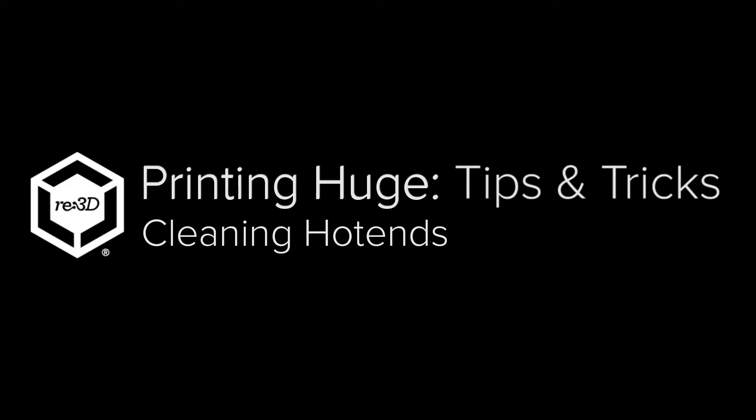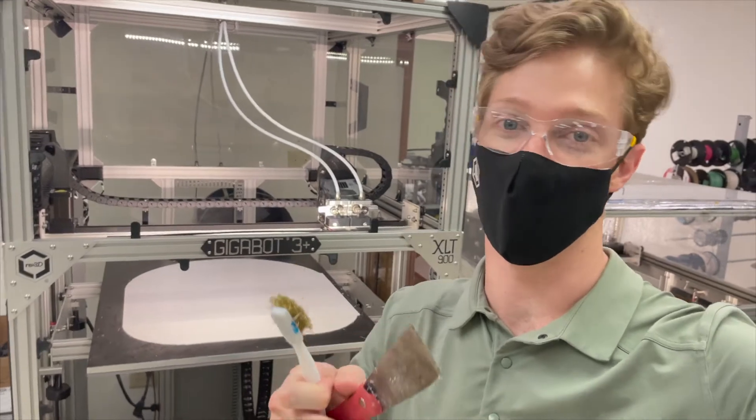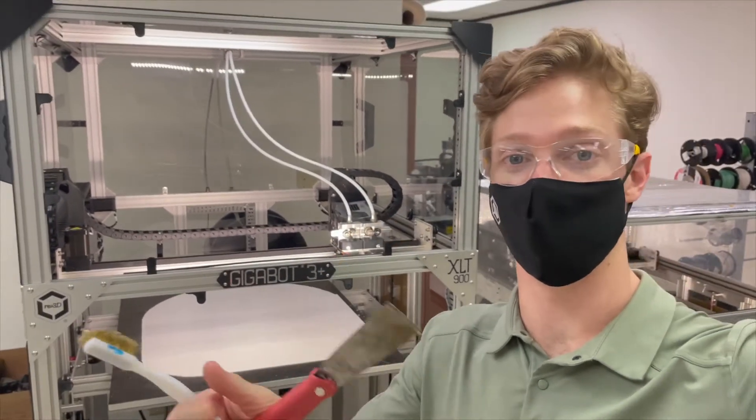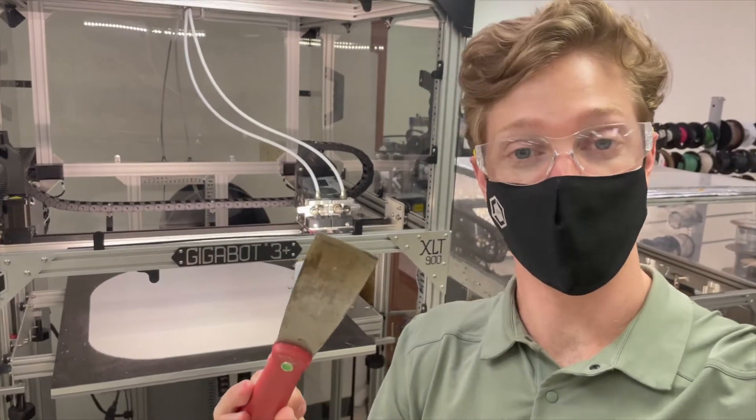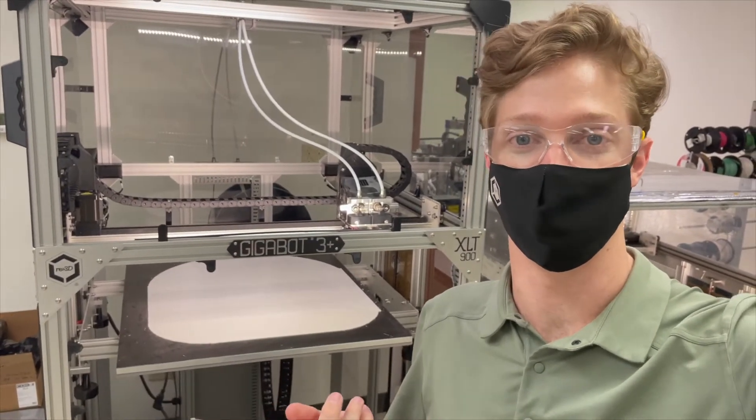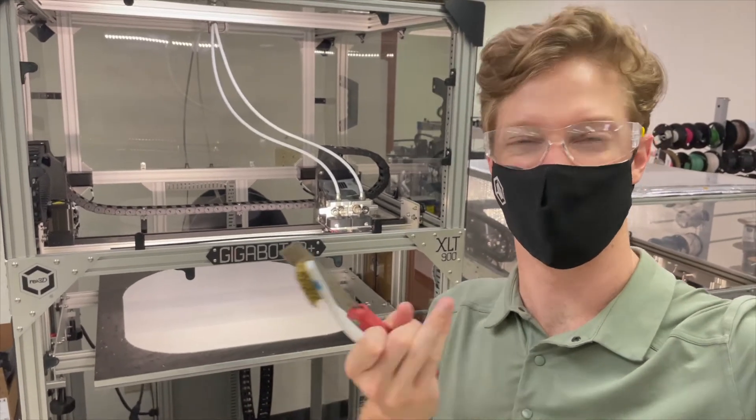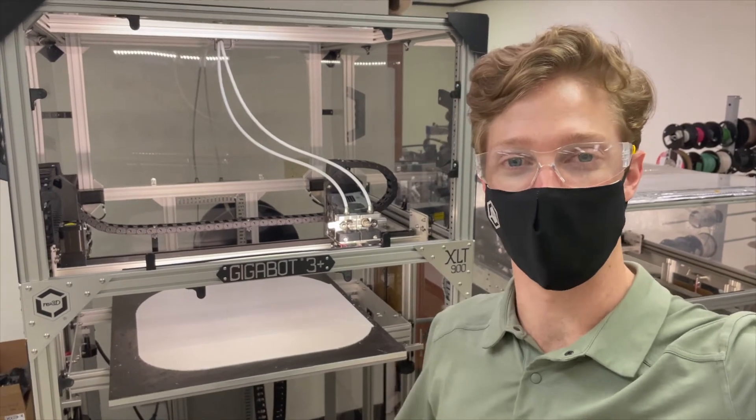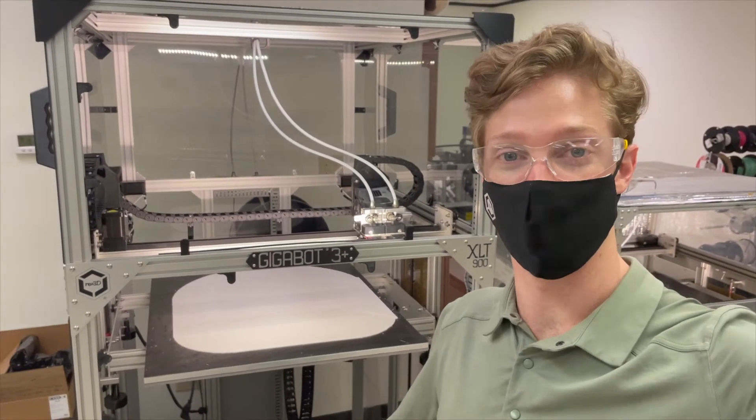Good afternoon everyone, this is Louis from RE3D here with a helpful tip for your Gigabot and it's how to clean your hot ends. Today we'll be using a brass wire brush or a stainless steel bristle brush and your putty scraper to clean the residual plastic off the underside of your hot ends. You want to do this so that residual plastic doesn't fall off and get caught in your future prints, so let's show you how to do that now.